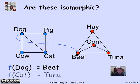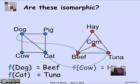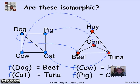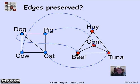Likewise, f of cat — cats eat tuna — I'm going to map cat to tuna. Continuing for the remaining two vertices, I'm going to map cow to hay, which is what they eat, and pig to corn, which is frequently what's fed to pigs. This is a bijection — a perfect correspondence between the four vertices on the left and the four vertices on the right. Now I have to check that the edges are preserved. There's an edge on the left between dog and pig, so there should be an edge on the right between where they go — between beef and corn. And indeed, there's an edge there.